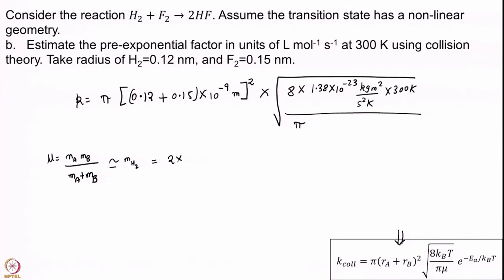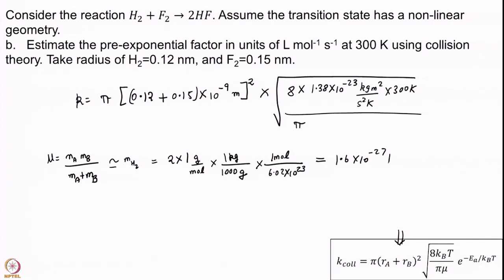Since hydrogen is so much lighter than fluorine, we approximate μ as the mass of hydrogen. The mass of H2 is 2×1 g/mol, converted to SI as 1 kg per 1000 g. I am doing all these problems explicitly so you get used to handling units — they are very important. Plugging everything in, I get 1.6×10⁻²⁷ kg. Moles cancel with moles, grams cancel with grams.